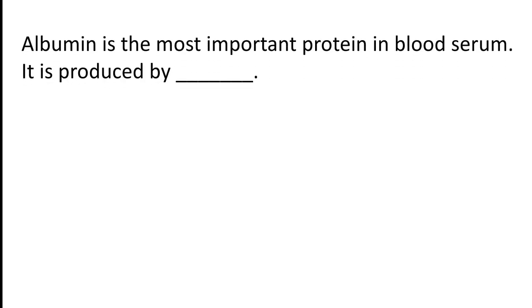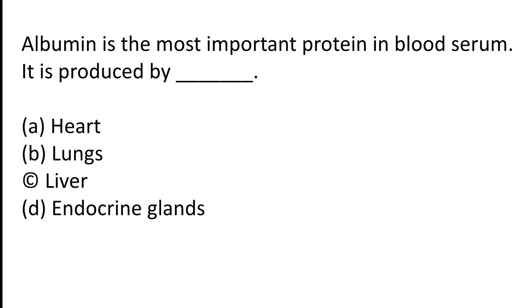Albumin is the most important protein in blood serum. It is produced by: A) heart, B) lungs, C) liver, D) endocrine gland. The correct answer is option C — liver.